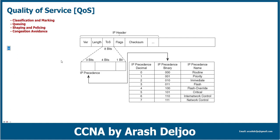For example, if we have a voice packet, we give this traffic to RTP, then to UDP, then we add the IP header, and then the Ethernet or data link header. This is a frame. In Quality of Service courses, in some cases I use the term 'packet' or the term 'frame' interchangeably — there's no significant difference here.